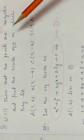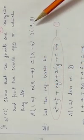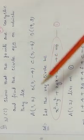Next, 20 second video. Show that the four points are concyclic and find the equation of the circle on which they lie. The four points are A, B, C, D.